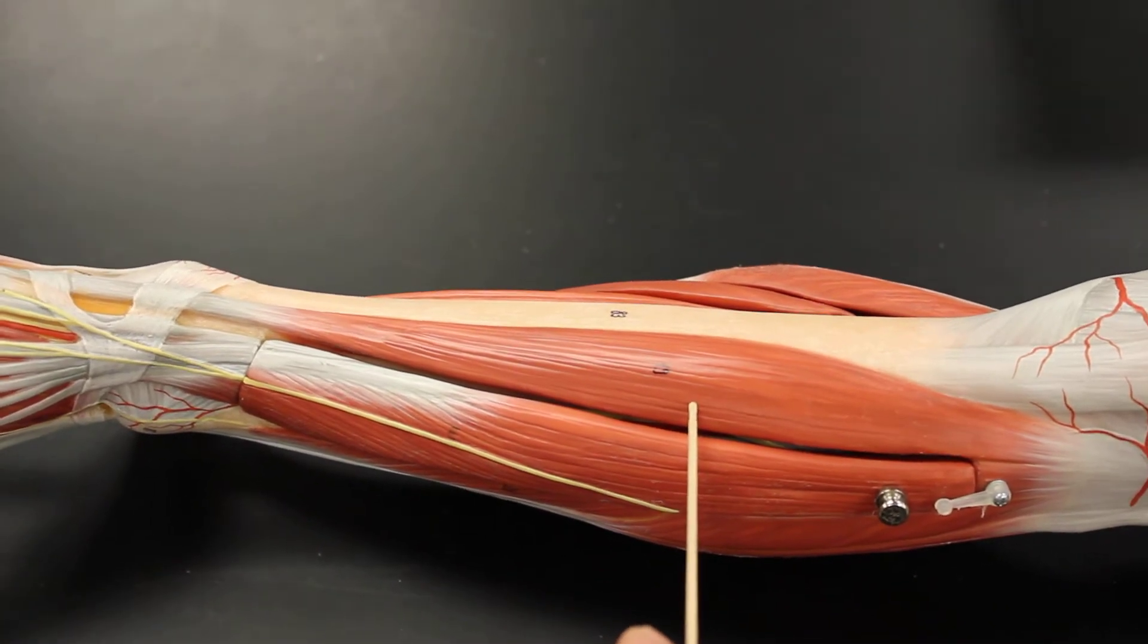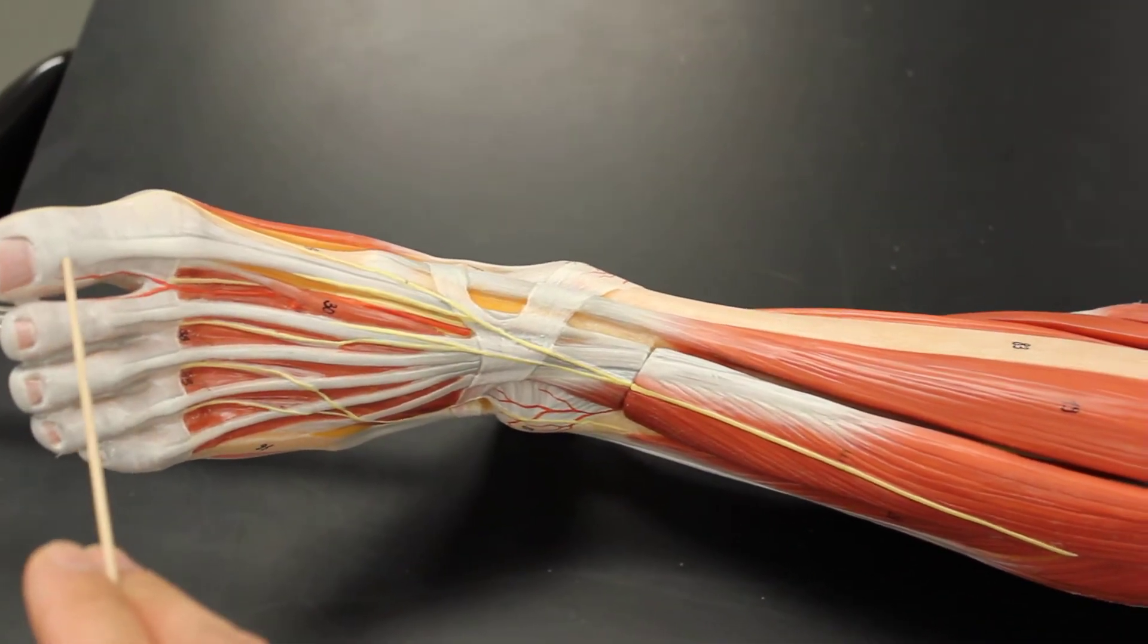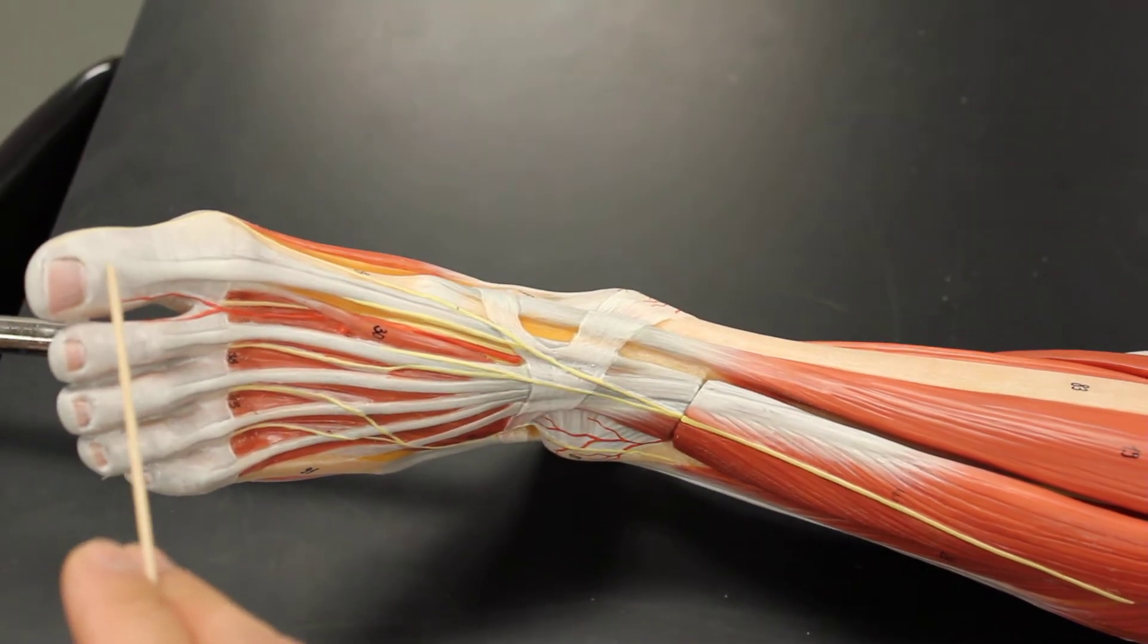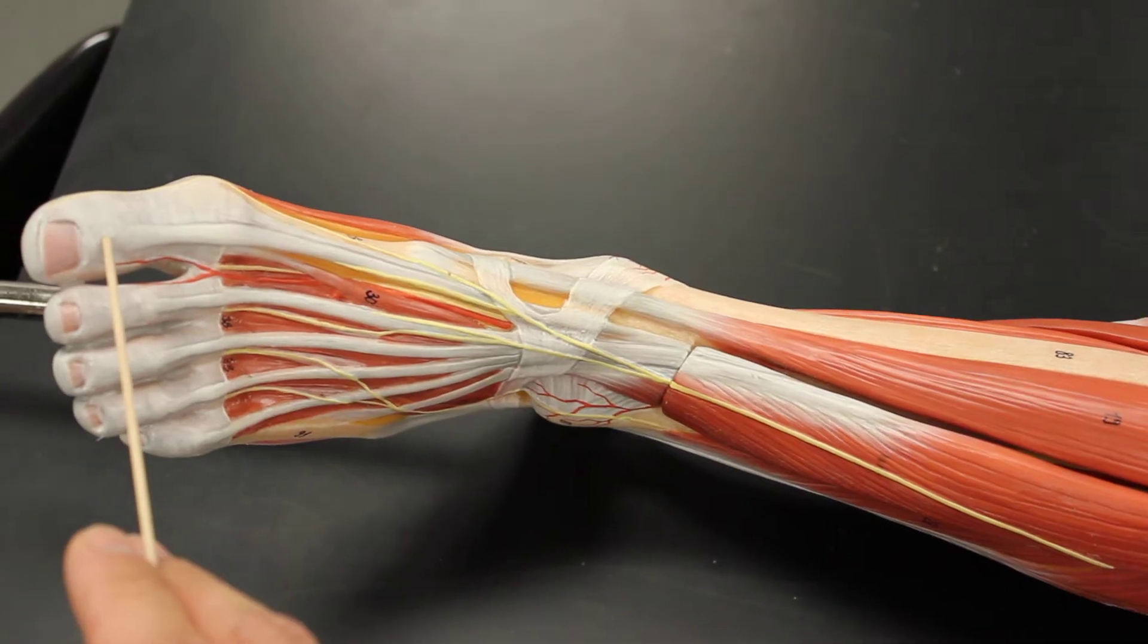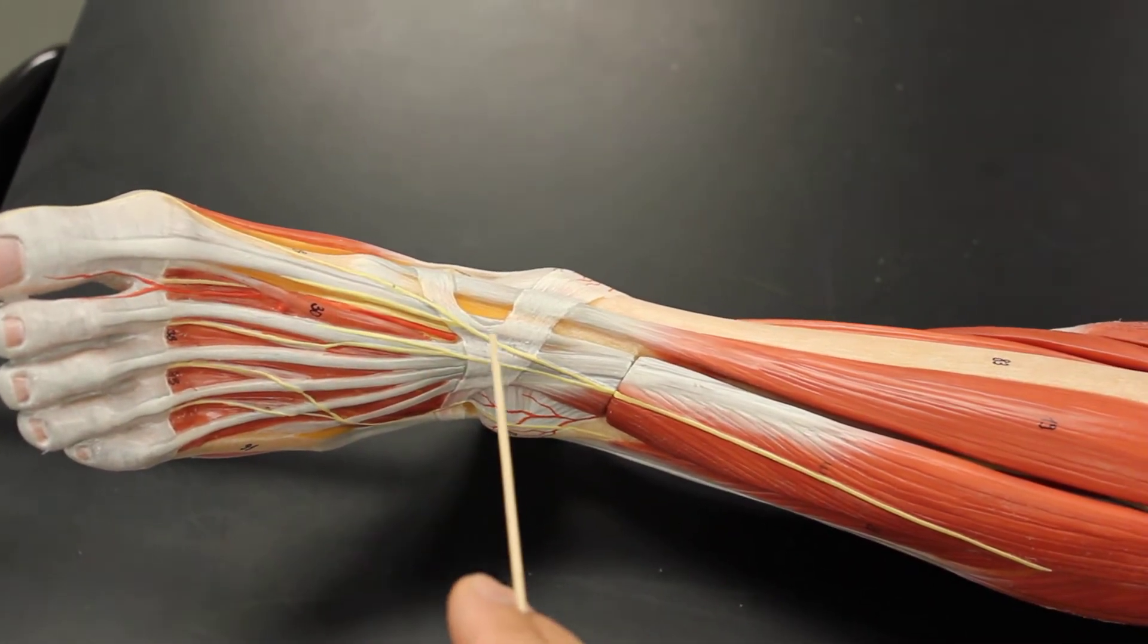The next two, you got to look at the tendons coming from the foot. So if you're looking at the foot here, follow the tendon from the big toe. And remember, that's called hallux. And so this is what we call the extensor hallucis longus.